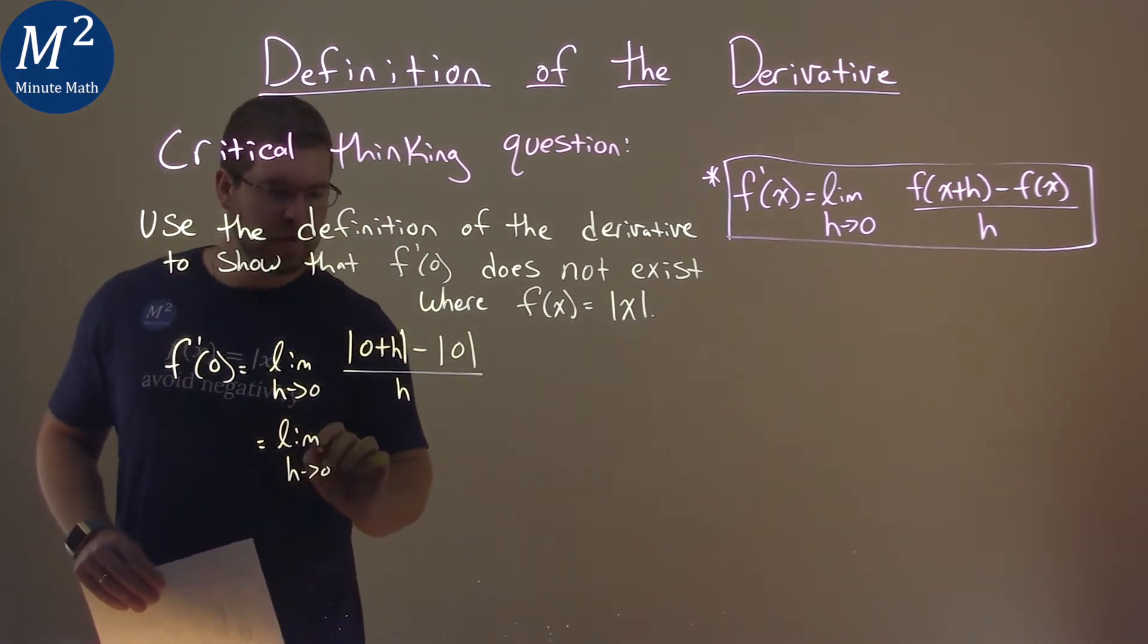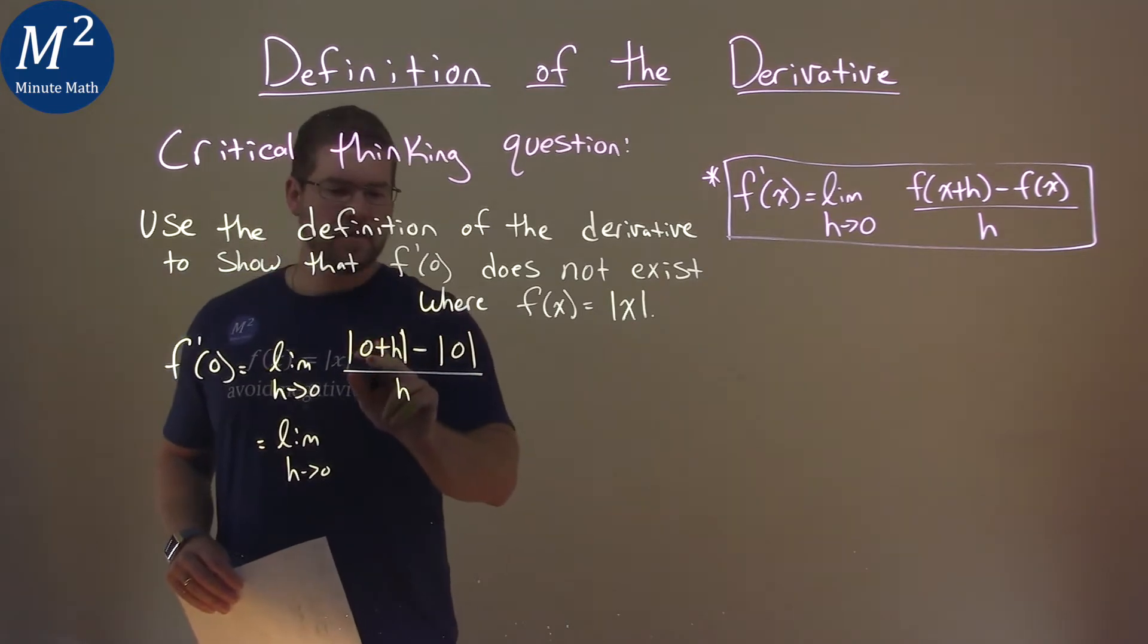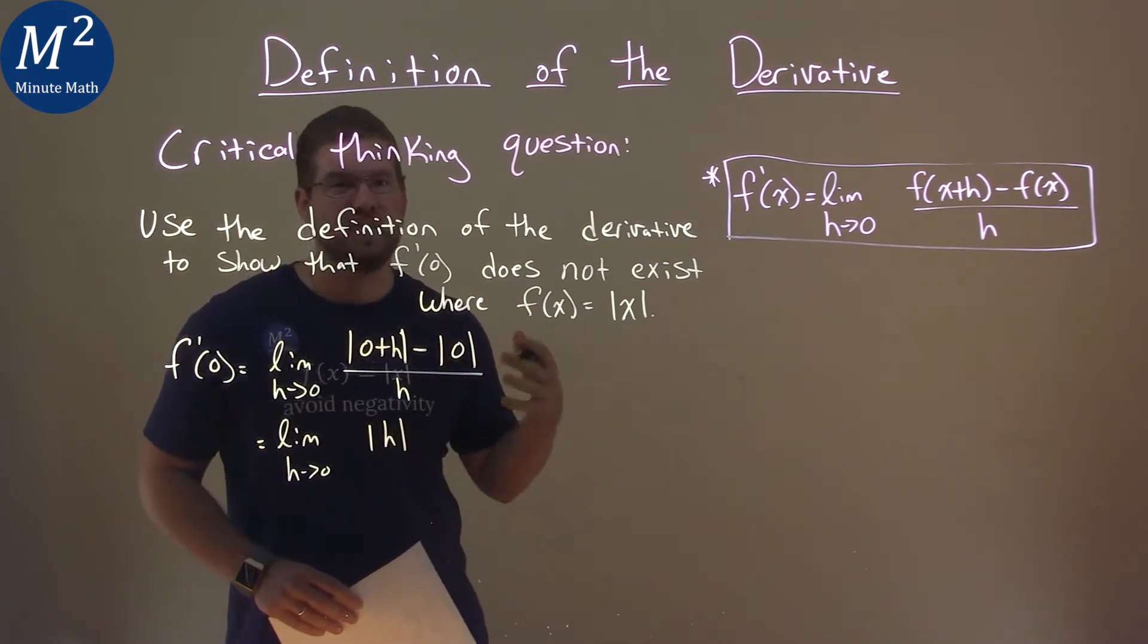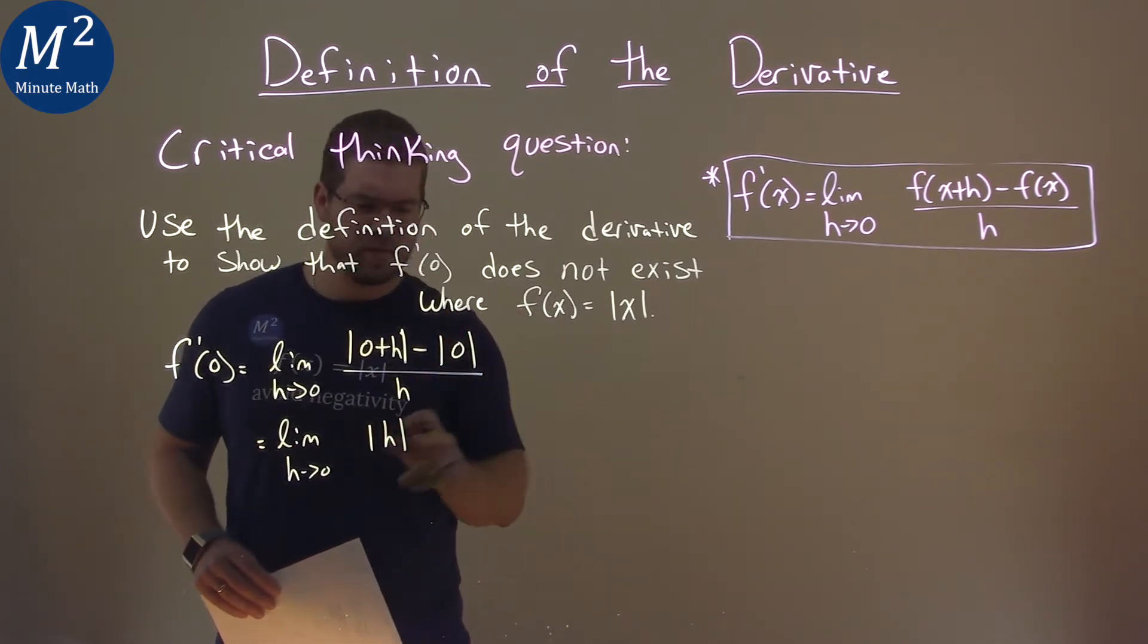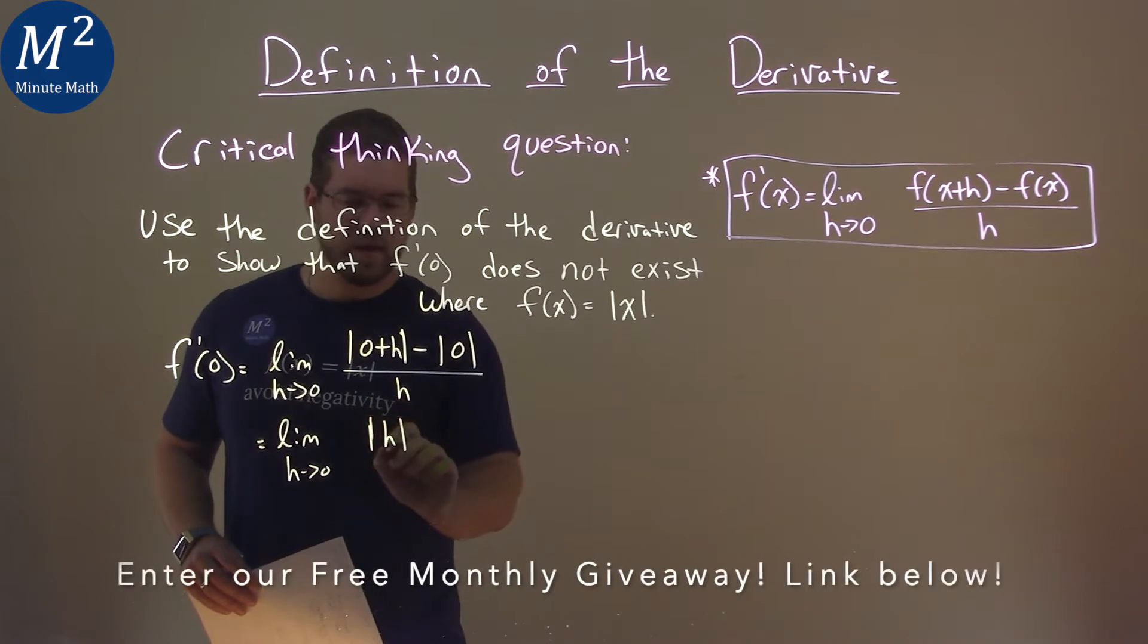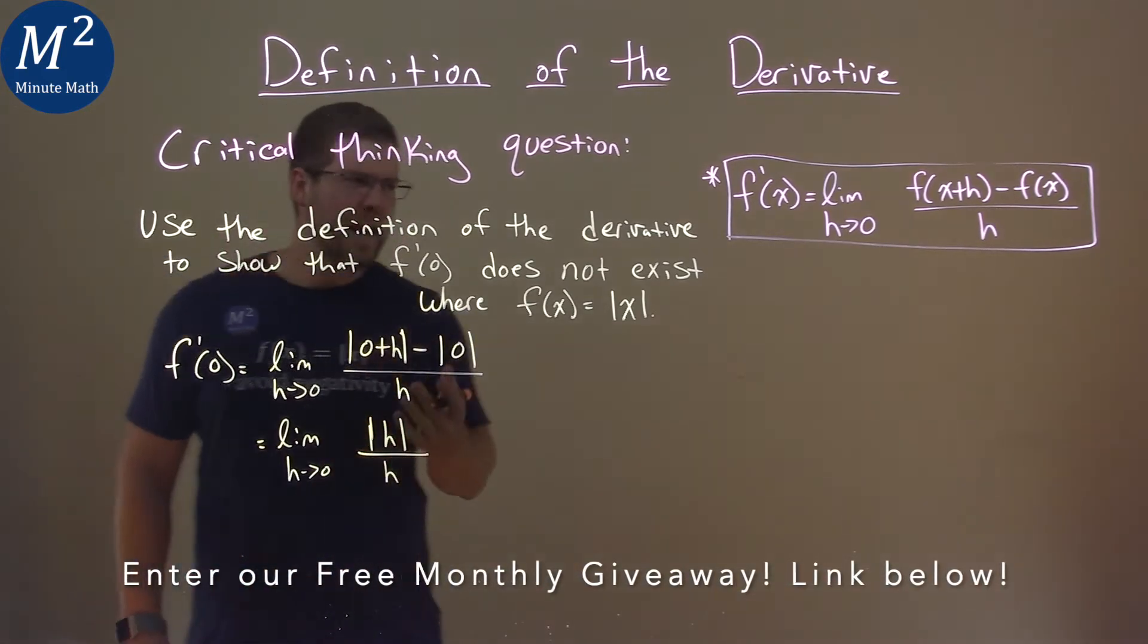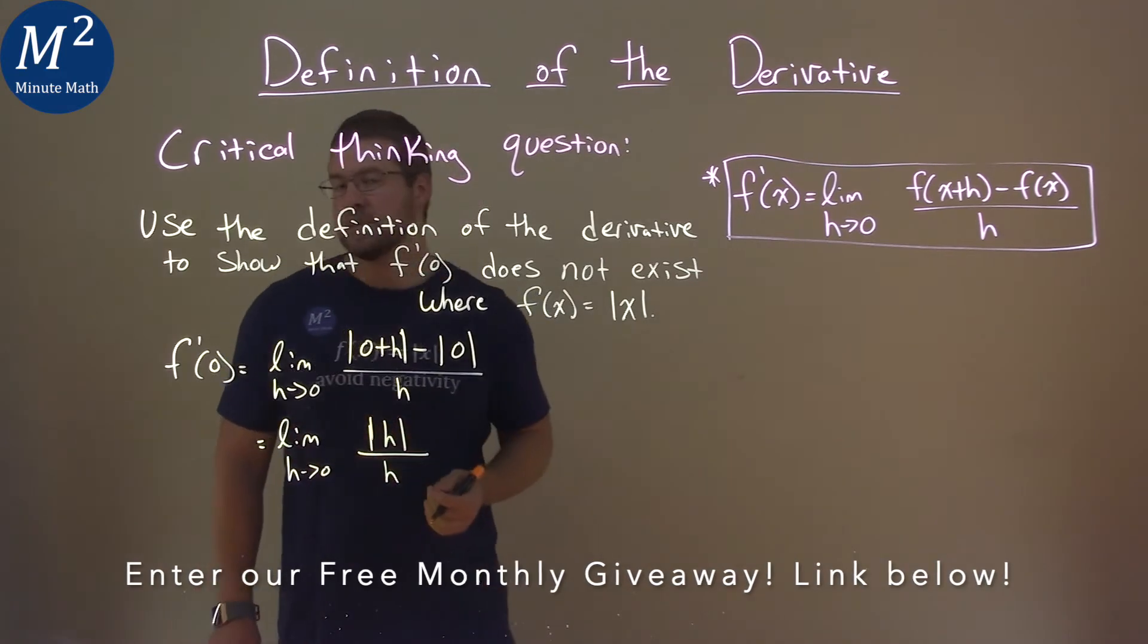Well, what does this simplify to be? The limit here, as h approaches zero, this here, well, zero plus h is just h, so the absolute value of h here. Absolute value of zero is zero, so that doesn't do anything, so we just have an absolute value of h here, and it's over just h.